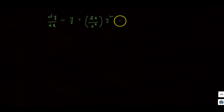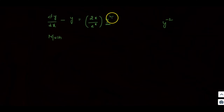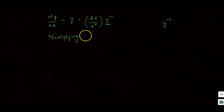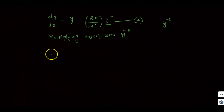This is the standard Bernoulli form. Now for the multiplication step: here y² means y^n where n equals 2. We multiply through by y^(−n), which is y^(−2). So multiplying equation 2 with y^(−2).